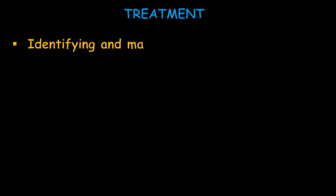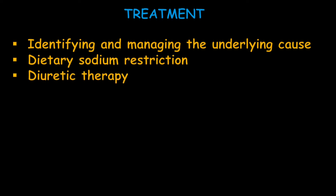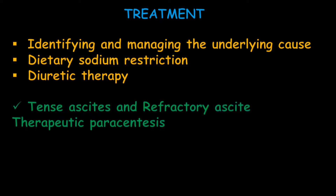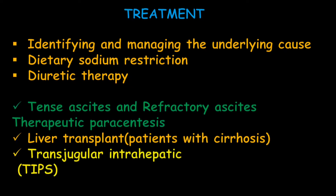For the management of ascites, we first identify and manage the underlying cause, along with dietary sodium restriction and diuretic therapy. Tense ascites and refractory ascites require therapeutic paracentesis. Liver transplant is also a treatment option for patients with cirrhosis who develop ascites. The TIPS procedure — transjugular intrahepatic portosystemic shunt — is also helpful.